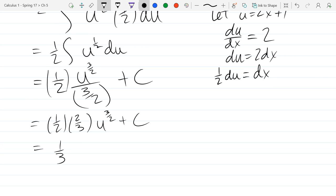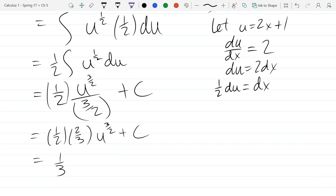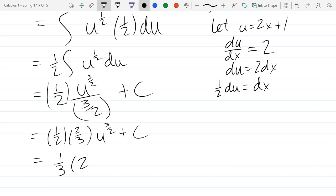And I'm going to take u back out and put in the original expression in x. So that's 2x plus 1 to the three halves power plus C.